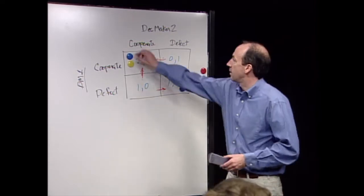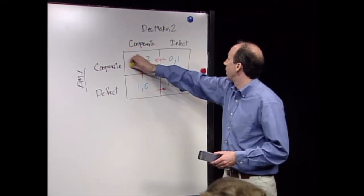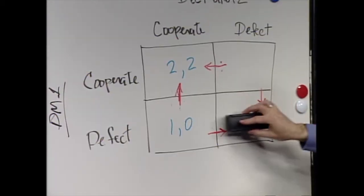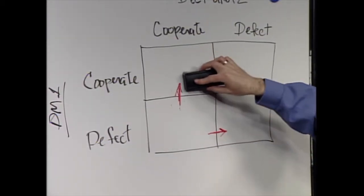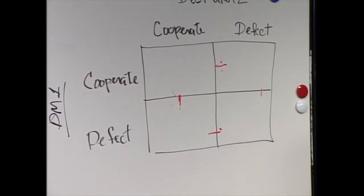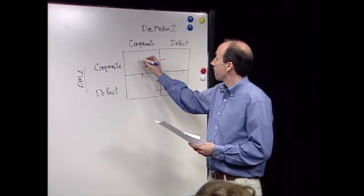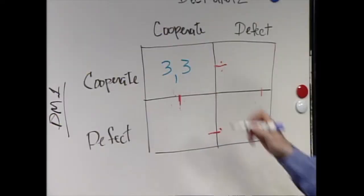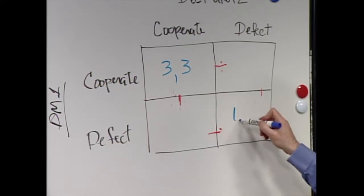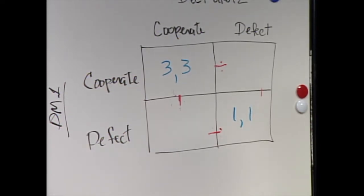One more game - the emblematic game that people talk about an awful lot. This is called the Prisoner's Dilemma. It has a lot of parallels in quite a few things that we think about. The payoff can look like many things, but let's say: if both cooperate, they both get a reward of 3 on a scale of 5; if they both defect, they get 1.